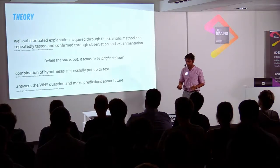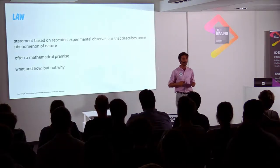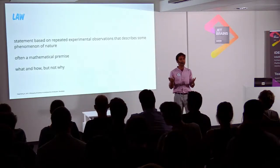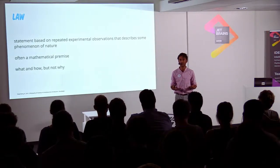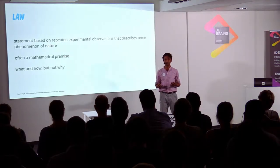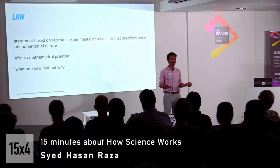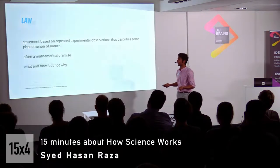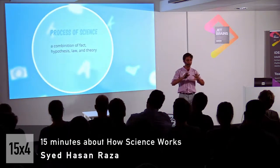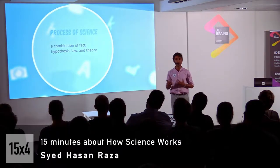Next comes law. A law is a statement based on repeated experiments that defines some phenomenon of nature, often giving us a mathematical premise. Unlike theory, it answers the what and how question — what is happening and how it is happening. These are the general elements of science, and the process of science consists of all four elements working together.